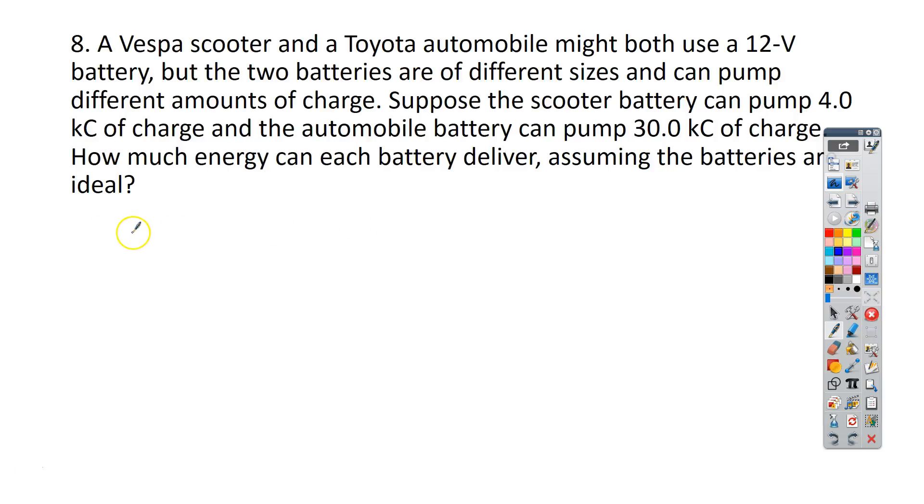So for number 8, let's go ahead and take a look at the scooter first. We know that work is equal to our E values. Remember, this is our EMF times Q. So that's equal to the 12 volts times our charge, which is 4,000 coulombs. And so here we get 48,000 joules of work that can be done.